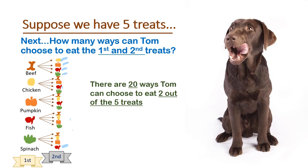Before we move on to Tom eating three out of five treats, I want to point out that this tree diagram is going to get harder and harder to make. So let's notice what just happened. Each of the five treats that we started with branched four times. And notice that five times four equals 20.